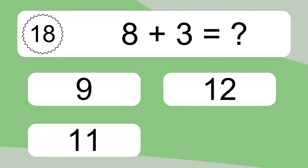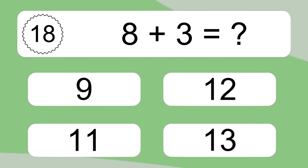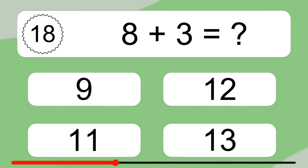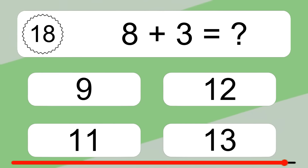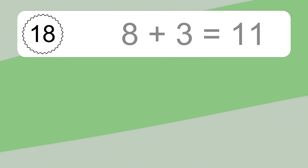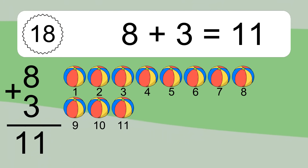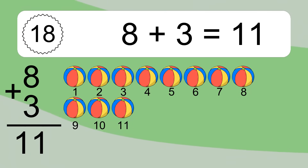8 plus 3 equals what? 8 plus 3 equals 11. Let's count it. 1, 2, 3, 4, 5, 6, 7, 8, 9, 10, 11.